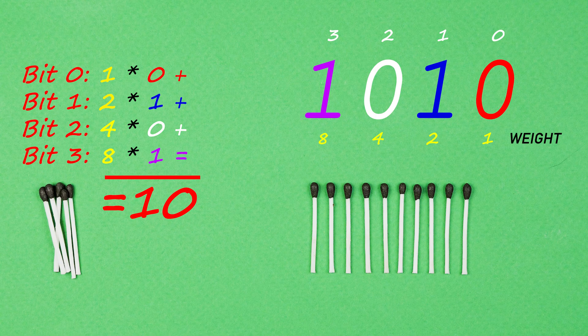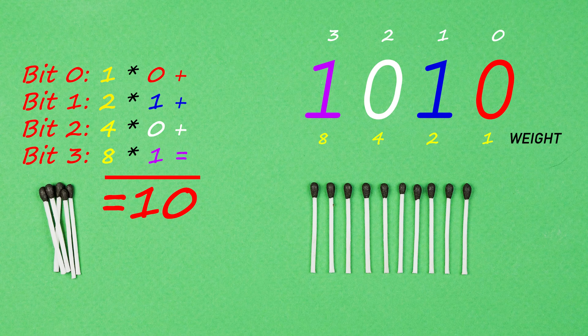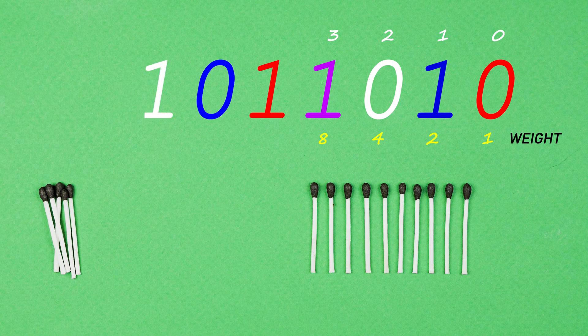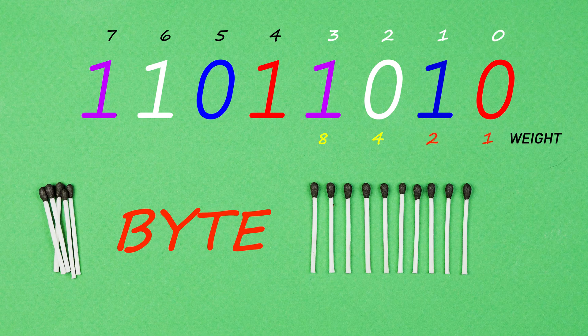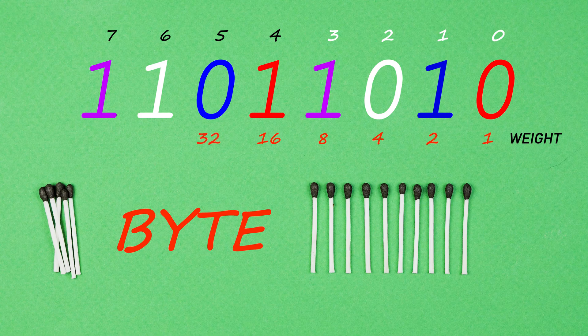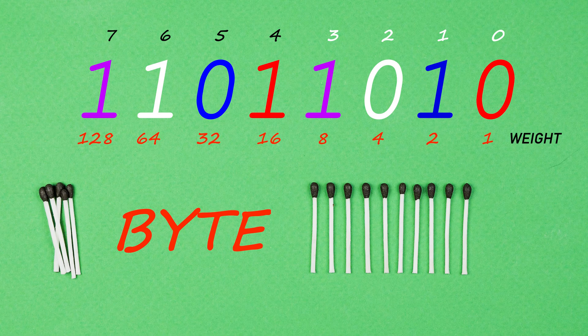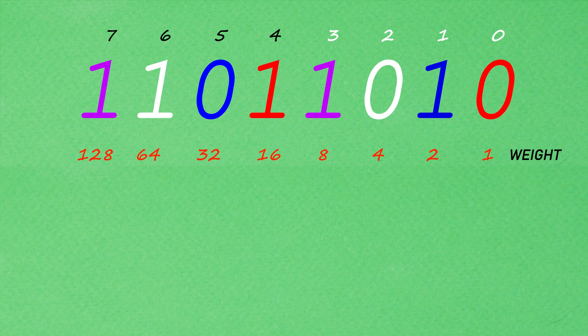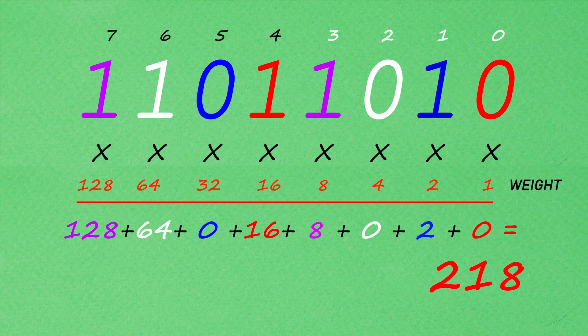If we were to convert a larger binary number, we'd have to use larger weights. For example, for an 8-bit number, which is called byte in programming, we would also use 1, 2, 4, and 8, and then 16, 32, 64, and 128. So if we had to convert this binary number into decimal, the result would be 218.